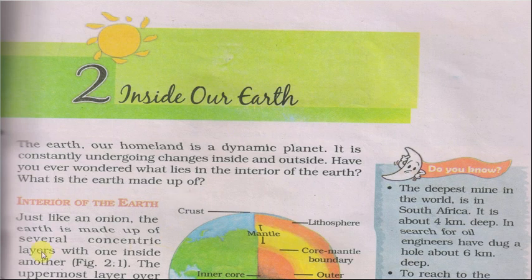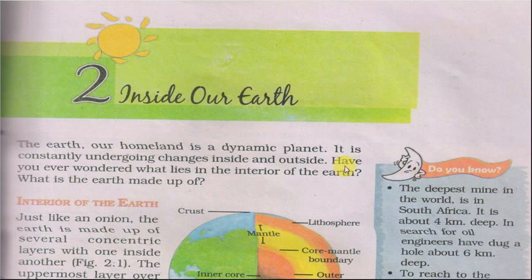Here the chapter begins. The Earth, our homeland, is a dynamic planet. It is constantly undergoing changes inside and outside. Hamari Prathvi ek gati sheel grah hai — iske andar aur bahar nirantar parivarthan hota rehta hai.